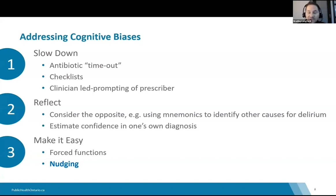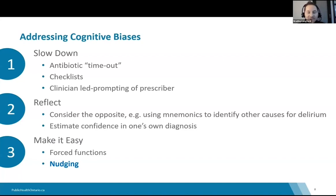Estimate the confidence of one's own diagnosis — this is called metacognition. And then finally, making it easy. Forced functions are one way: if you have an electronic medical record, you can force the prescriber's hand toward more appropriate durations of therapy or require including an indication for prescribing. But nudging is an underused opportunity to make it easy for clinicians to do the right thing.